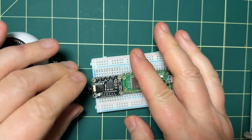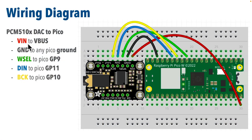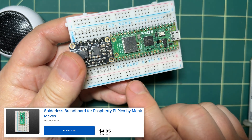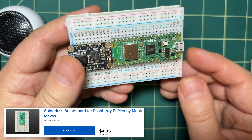Here are the Pico pins I recommend wiring to. VIN on the DAC should go to VBUS on the Pico. GND on the DAC should go to any Pico ground. WS, or word select, on the DAC should go to the Pico's GP9 pin. DIN for digital in should go to the Pico's GP11 pin. And BCK — the bit clock that tells the DAC when to read data — is wired to the Pico's GP10. You can fit both boards onto a half-size breadboard; it's tight but it'll work. I love the Monk Mix boards because they have the Pico pinouts right on the breadboard.